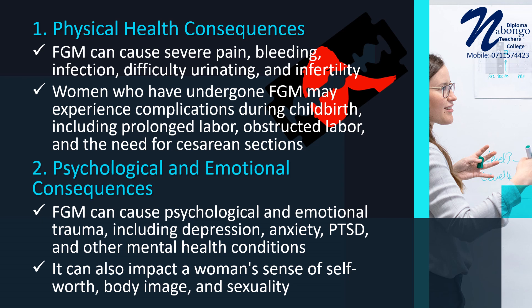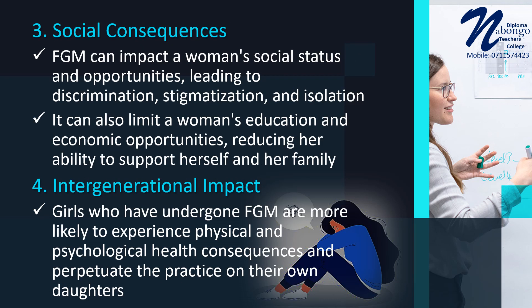Number 2 — Psychological and Emotional Consequences: FGM can cause psychological and emotional trauma, including depression, anxiety, post-traumatic stress disorder (PTSD), and other mental health conditions. It can also impact a woman's sense of self-worth and body image. Number 3 — Social Consequences: FGM can impact a woman's social status and opportunities, with girls and women who have undergone FGM often experiencing discrimination, stigmatization, and isolation. FGM can also limit a woman's education and economic opportunities, reducing her ability to support herself and her family.